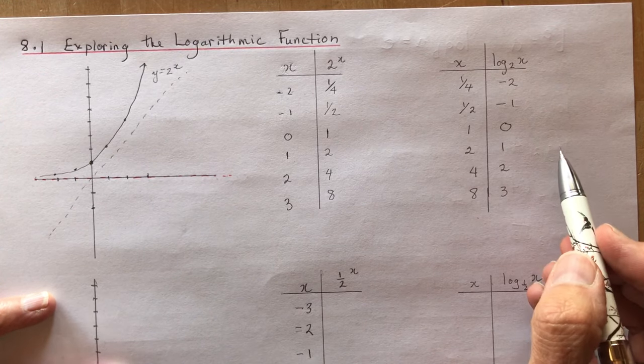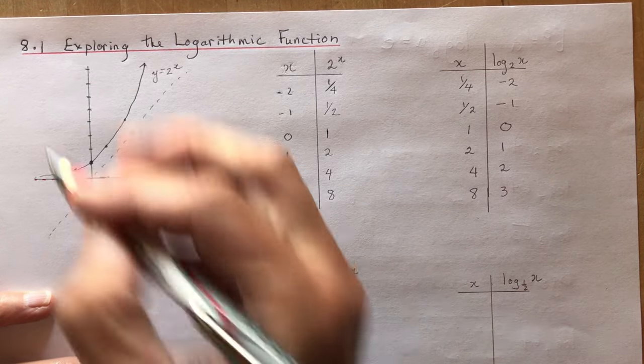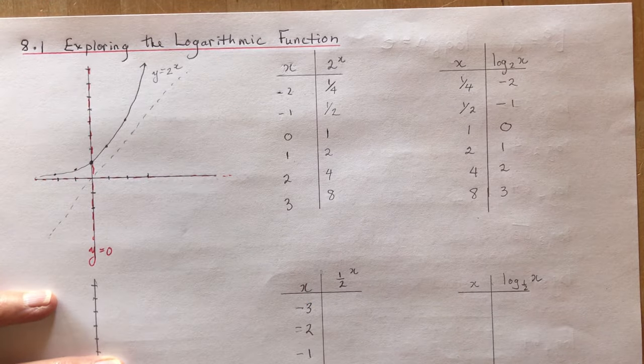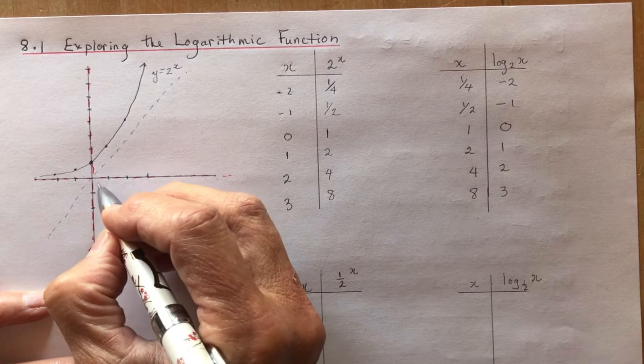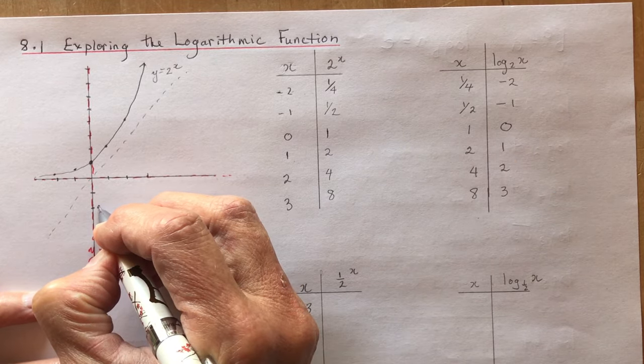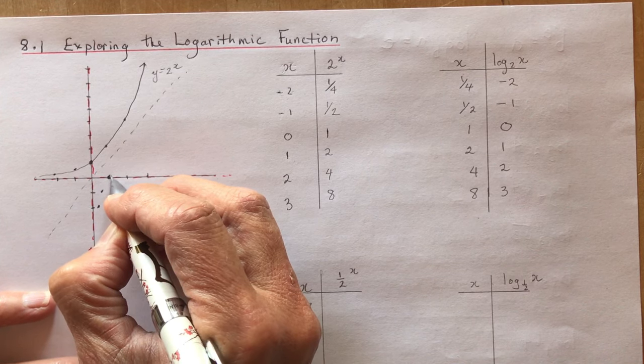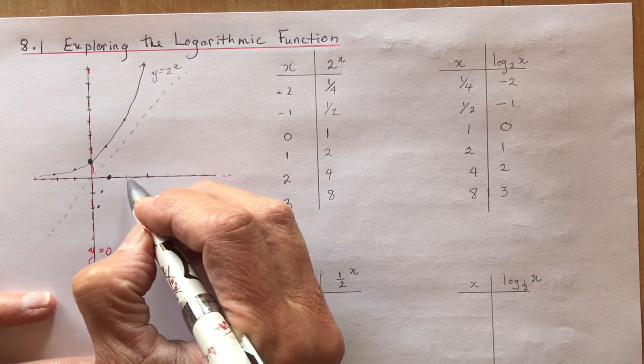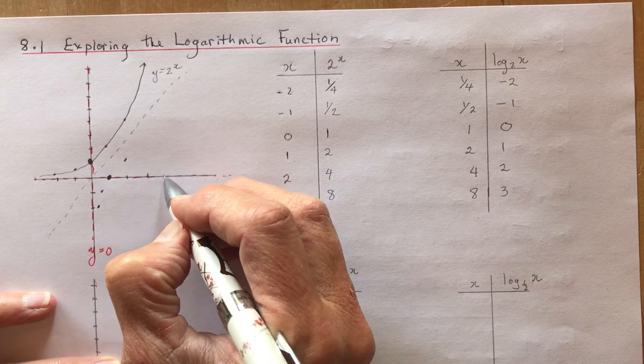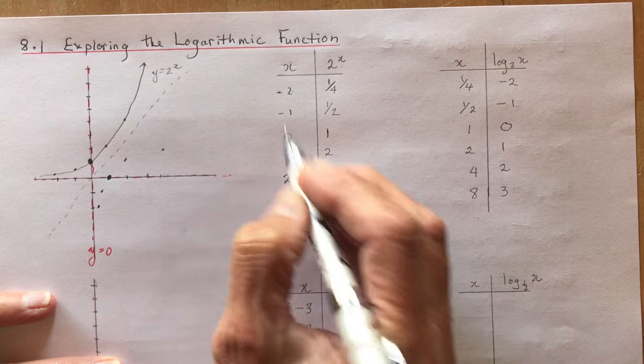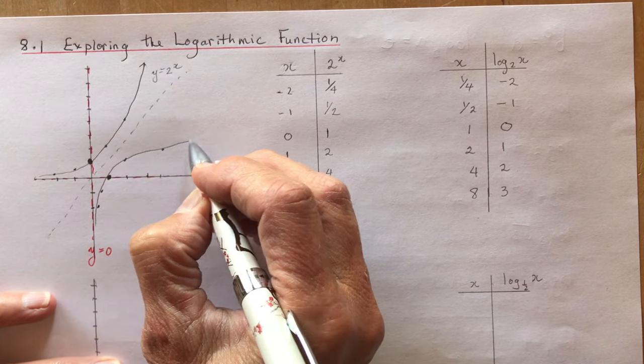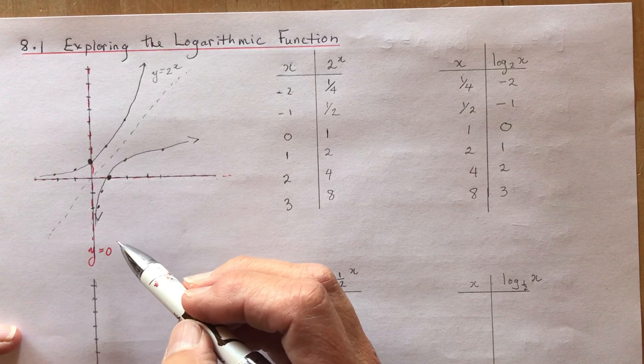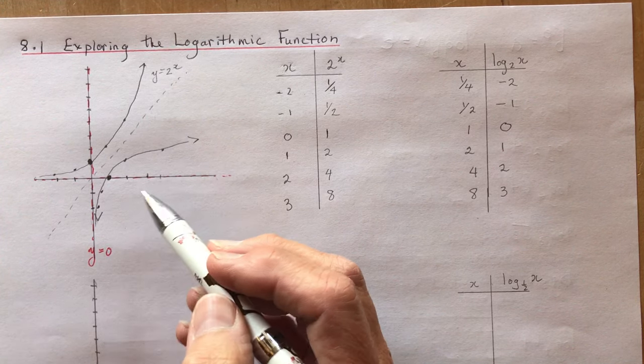The logarithmic function is going to have an asymptote of x equals 0, and my function is going to be on this side now. So I have x is 1/4 and y is -2, then 1/2 and -1, 1 and 0. The x-intercept for the exponential is 1 and the x-intercept for the logarithmic function is 1. Then 2 and 1, 4 and 2, and 8 and 3. You can see that it is a reflection about this line. Note that it does not cross the vertical asymptote. You never cross vertical asymptotes.